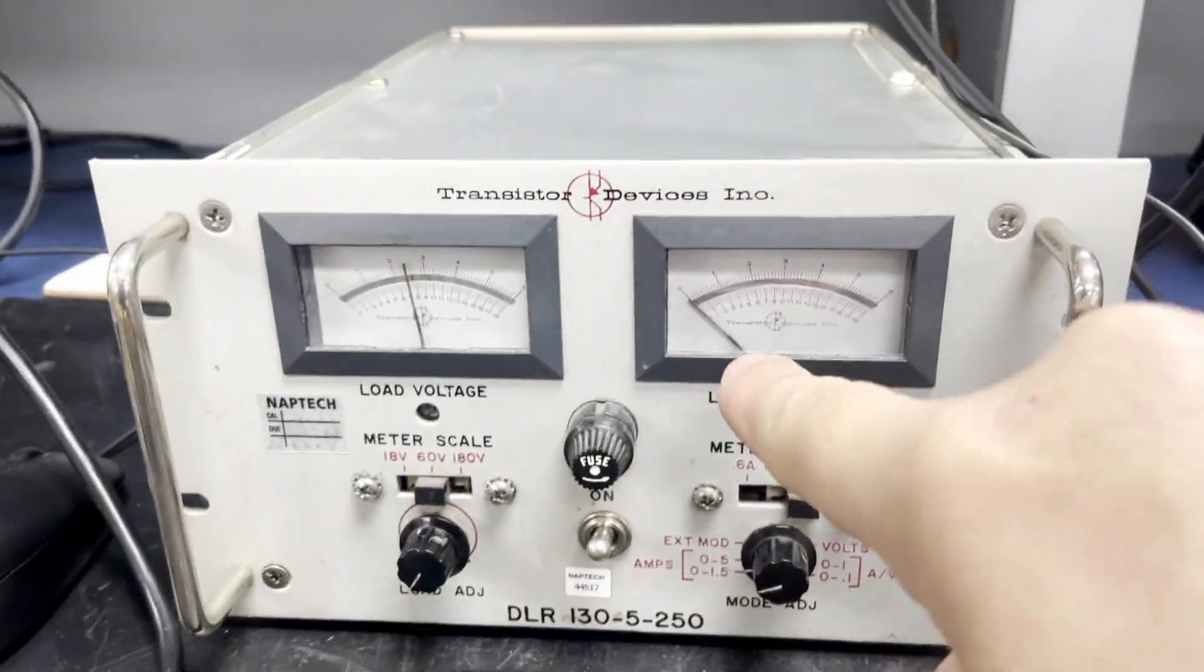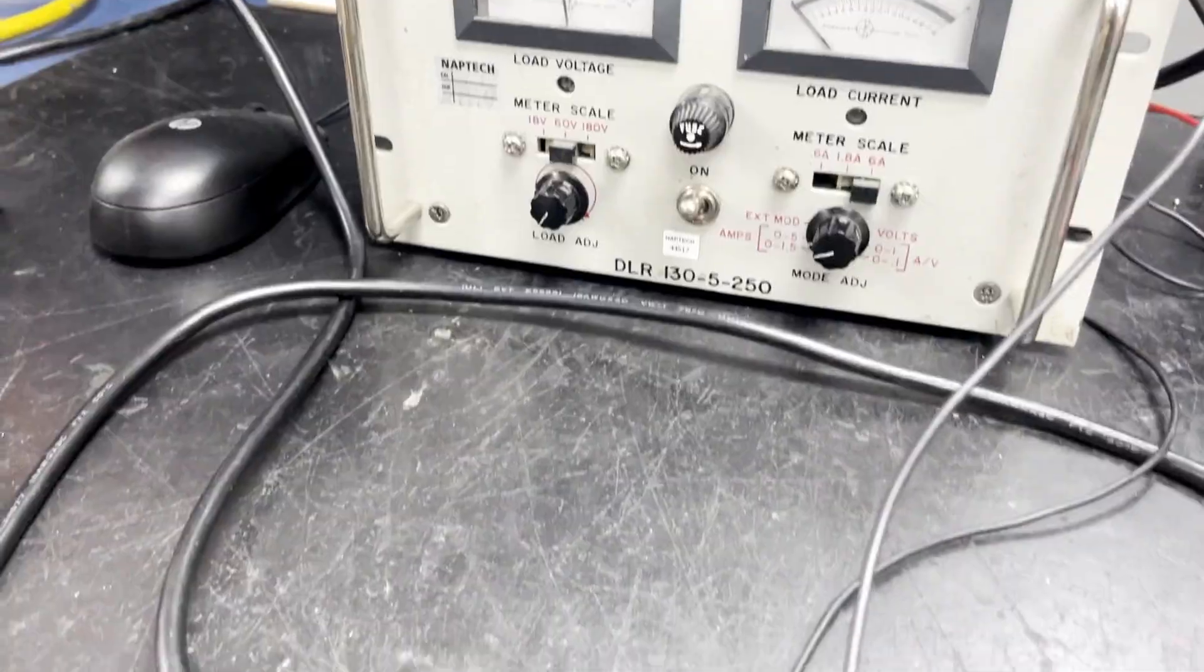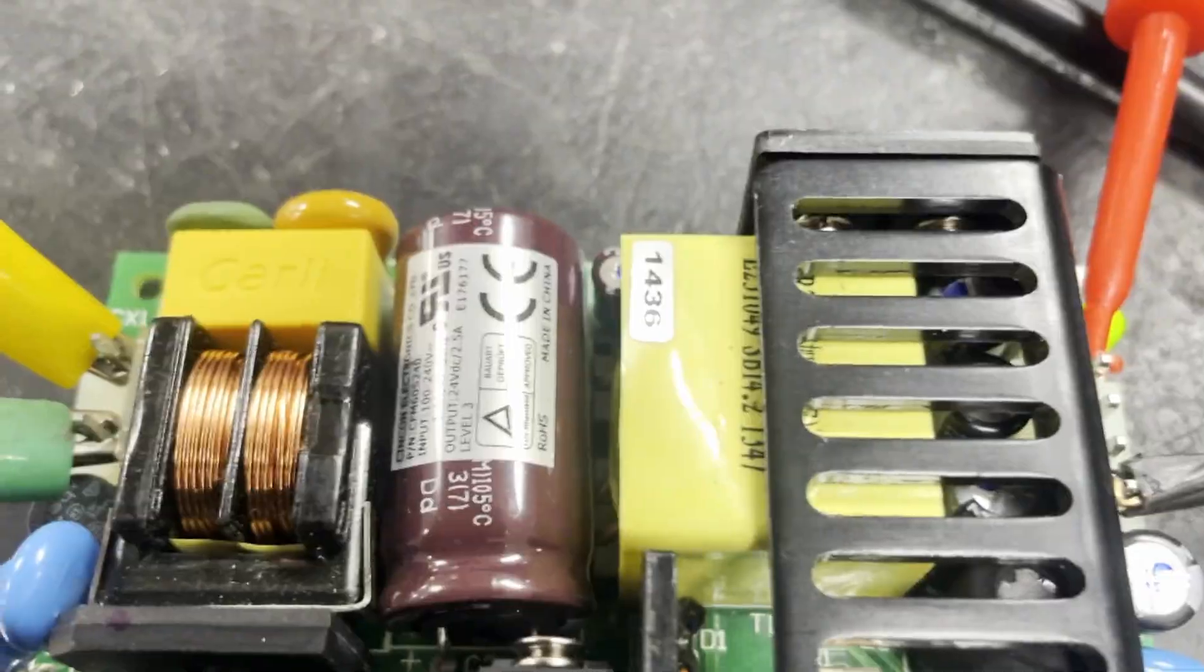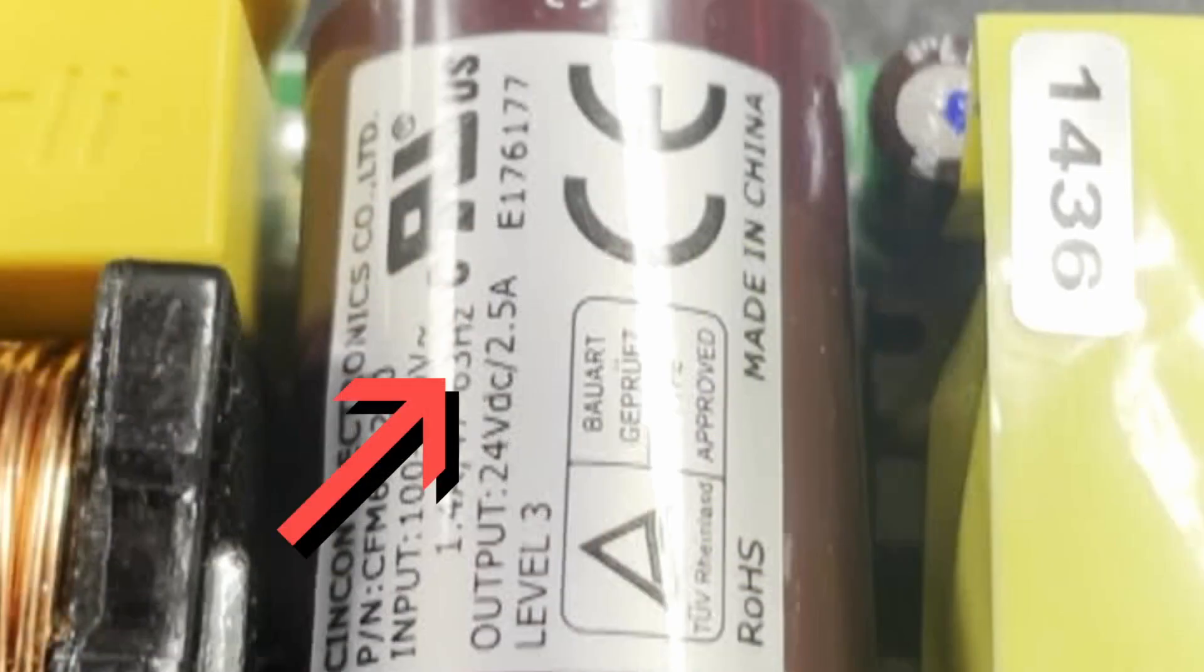Now, at this point, we have no load applied to the device, so we will increase that to its rated amperage. In this case, the output is rated at 2.5 amps.